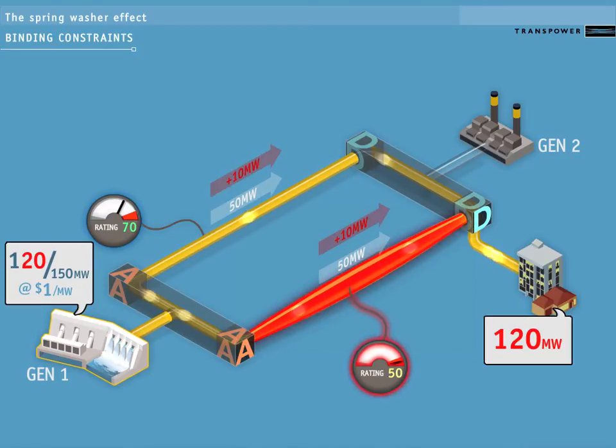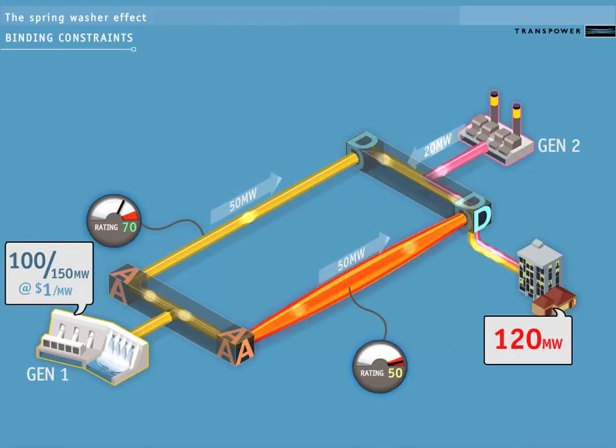Since this line is constrained, in order to supply the load at bus D, we'll have to use generator 2, which is not affected by the constraint. This illustrates how binding constraints can introduce additional restrictions on a transmission grid.